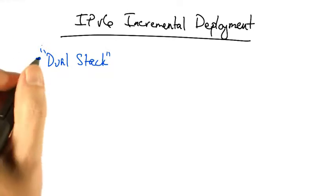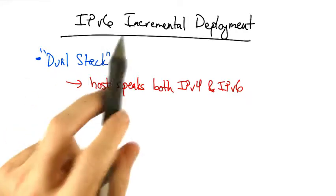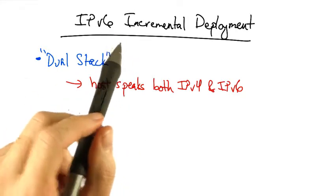One is what's called a dual stack deployment. In a dual stack deployment, a host can speak both IPv4 and IPv6. It communicates with an IPv4 host using IPv4 and communicates with an IPv6 host using IPv6.